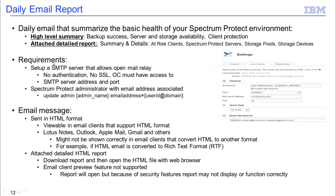The requirements to use this daily email report are once again to have an SMTP server set up and to have a Spectrum Protect administrator with email addresses associated. The email message is sent in HTML format, so it is viewable in most email clients like Lotus, Outlook, Apple, Gmail, and so forth. The attached report is also an HTML report, so when you download and open it, it will open in a web browser.